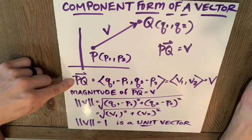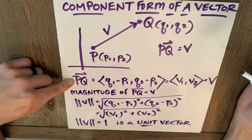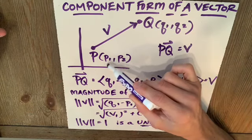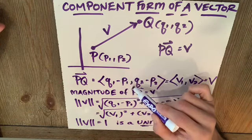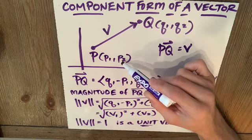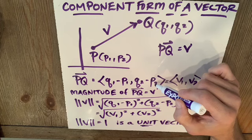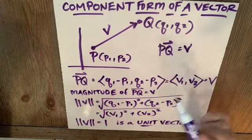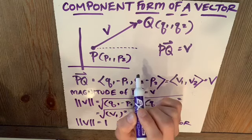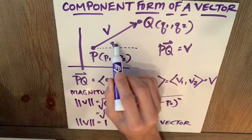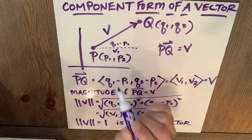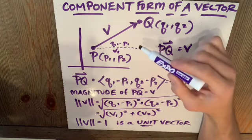Well, vector pq, its components would be x-final, which is q1, minus x-initial, which is p1, comma y-final, which is q2, minus y-initial, which is p2. Now, look what happens here when we do q1 minus p1.